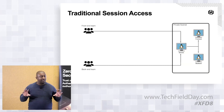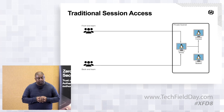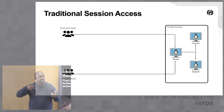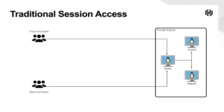Let's look at this in more practical terms. With traditional session access, you probably use something like a bastion or a jump box where you SSH into a VM that has a public IP address but also sits on a private network. By virtue of that, it has network connectivity and access to everything in that private subnet. You SSH onto this jump box and from there SSH onto another VM or make a postgres command to a database.